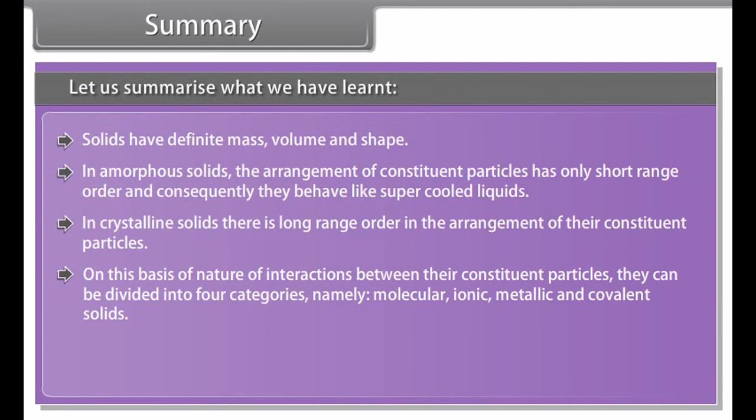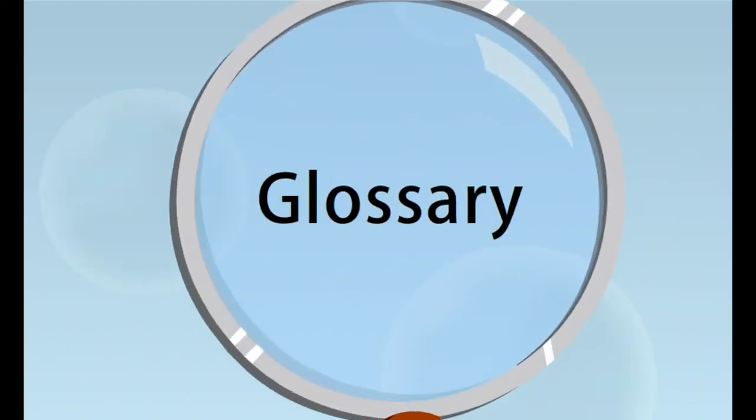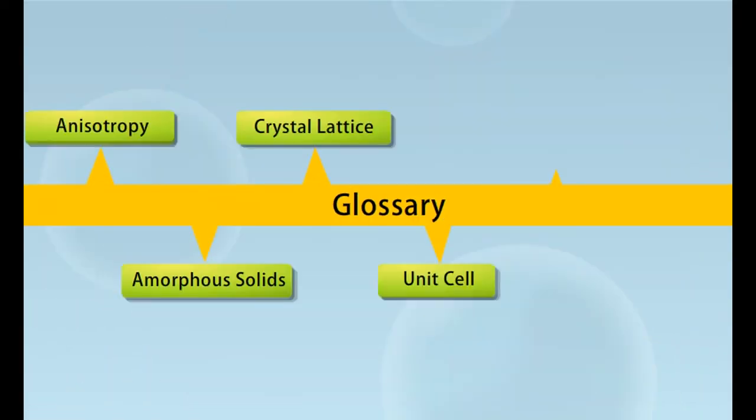When a unit cell contains one or more constituent particles present at positions other than corners, in addition to those at corners, it is called a centered unit cell. Centered unit cells are of three types.